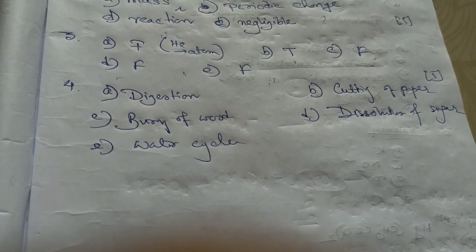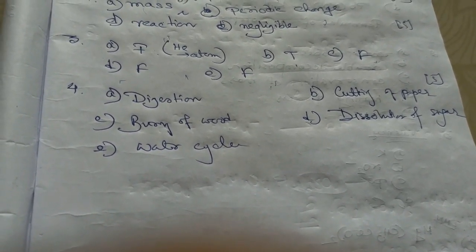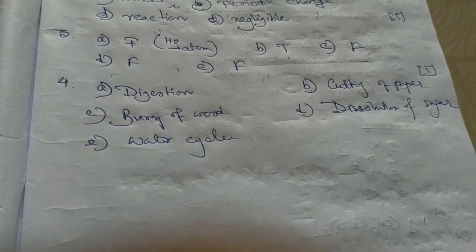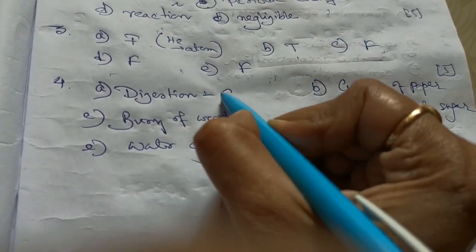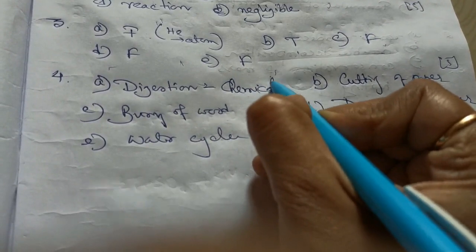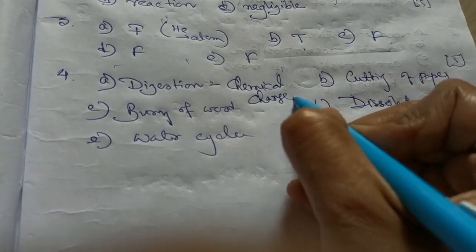Next you need to check or you need to select whether these changes are physical change or chemical change. Digestion of food. Digestion of food is of course a chemical change. It's a permanent change as well. So it's chemical change.